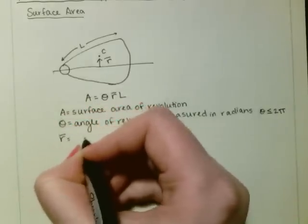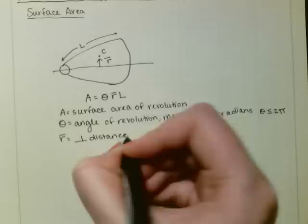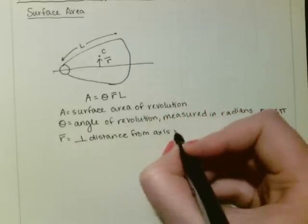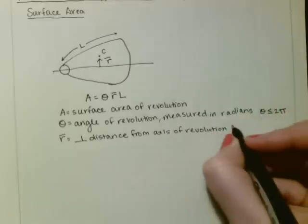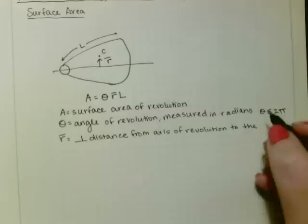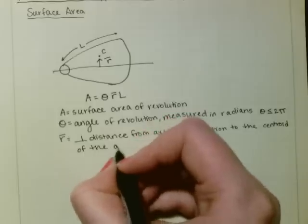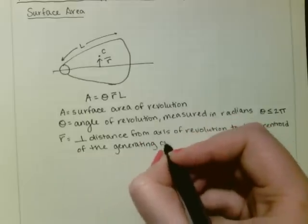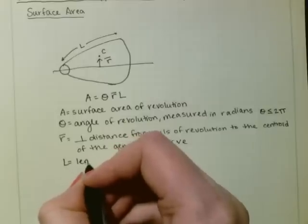Where r̄ is equal to the perpendicular distance from the axis of revolution to the centroid of the generating curve. And L is equal to the length of that generating curve.